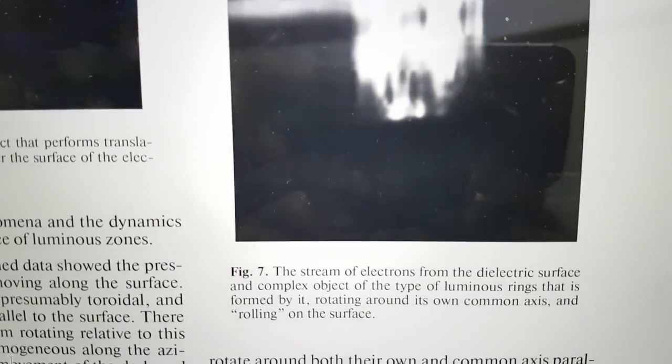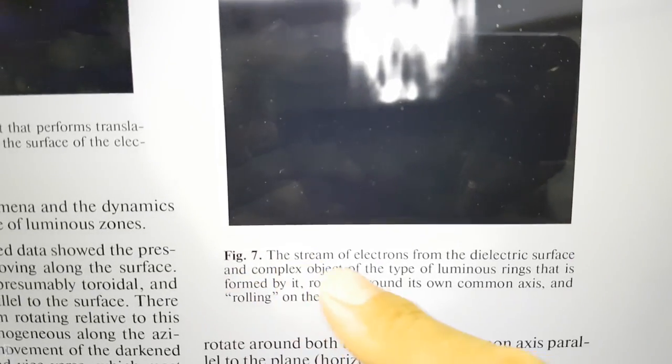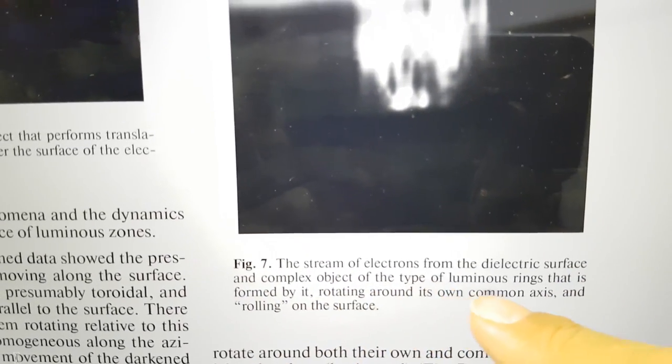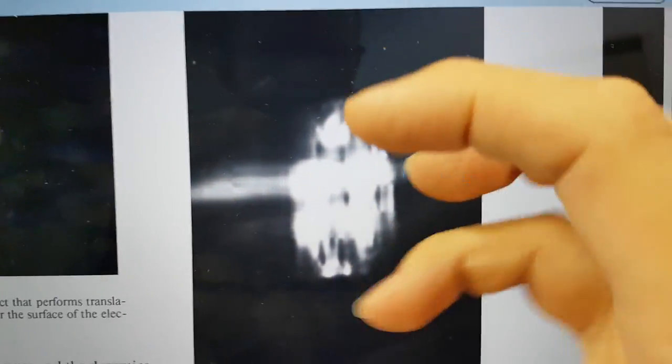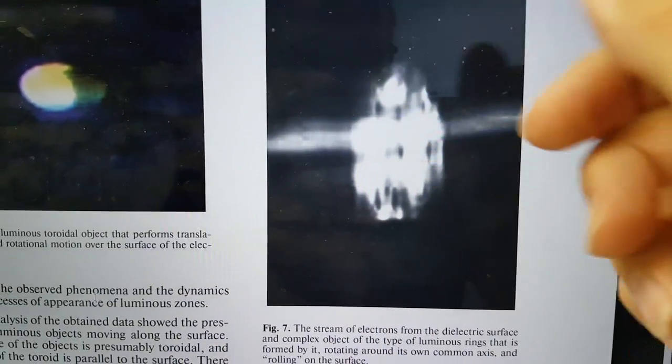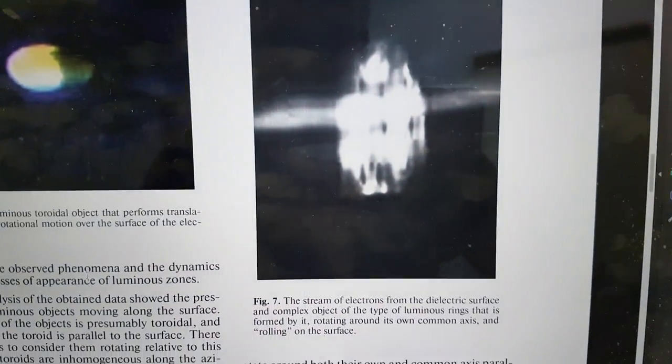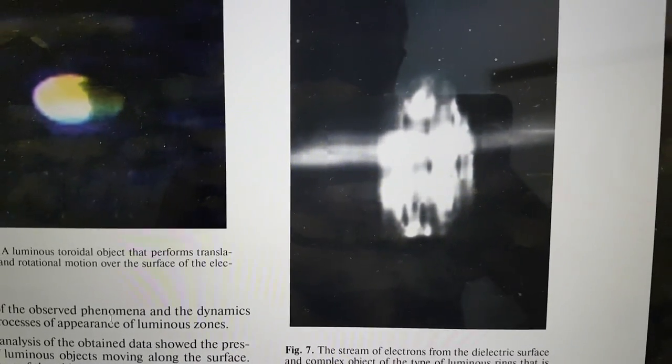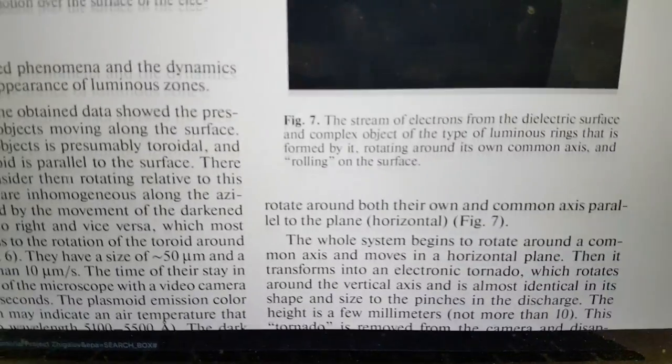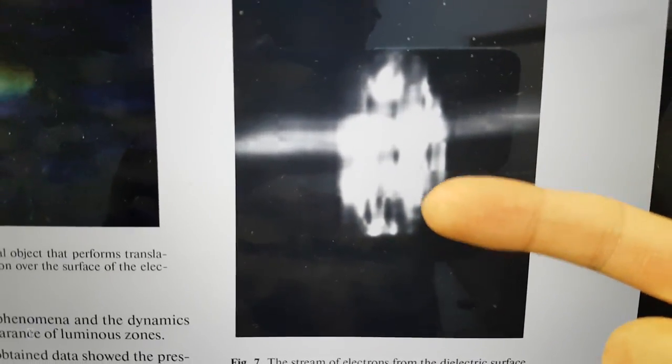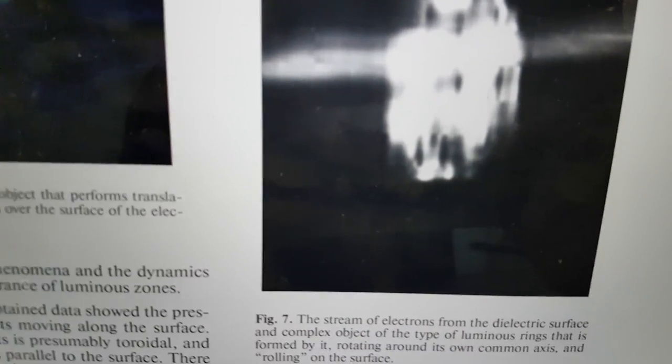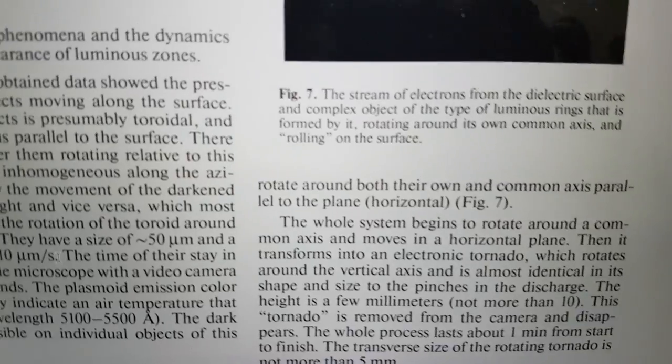This is what Felix was really interested in showing me, is that the stream of electrons from the dielectric surface and complex object of type luminous rings that is formed by it. It's rotating around its own common axis and rolling on the surface. This is a cluster of these structures in a kind of a group. They describe elsewhere in the previous article on the web that's like fractal structures. And they roll along the surface. Seriously. That's what it says. They didn't know that I was going to go to Japan. I didn't know about this paper. This is published after I gave my Sochi presentation. What is going on?